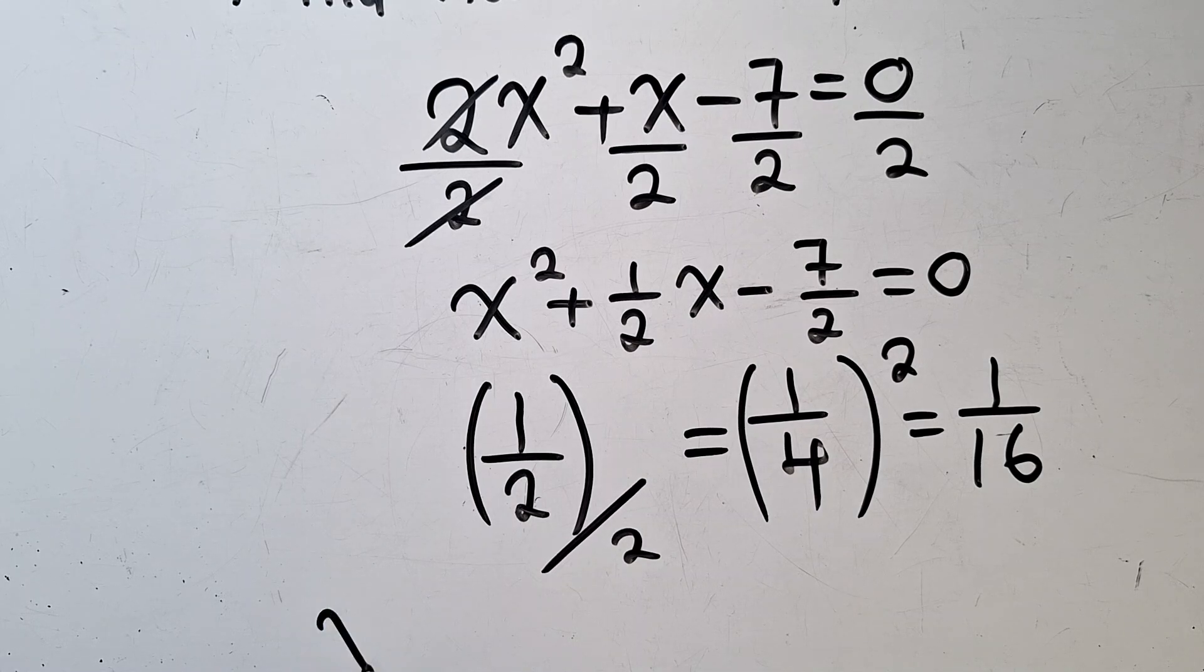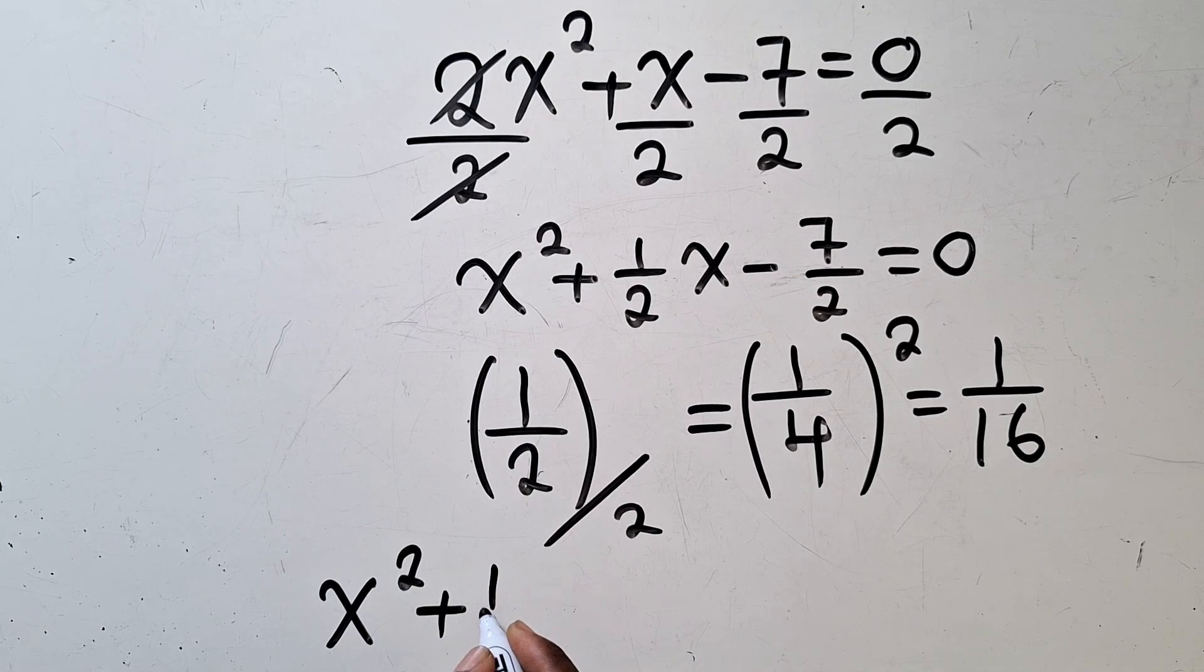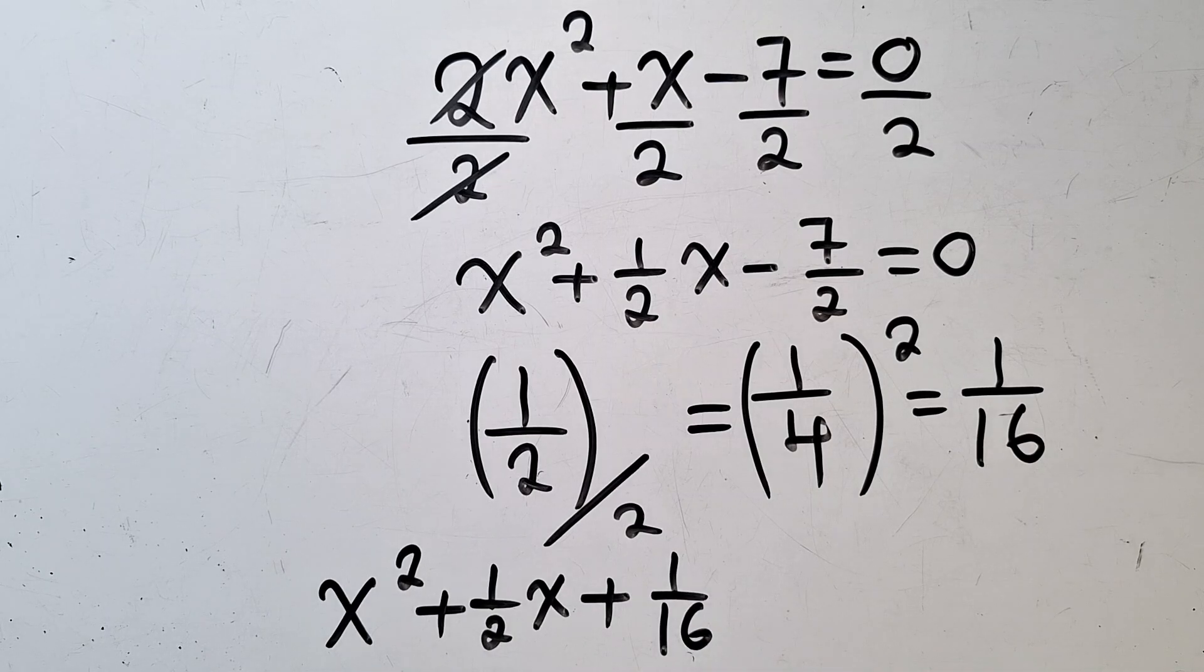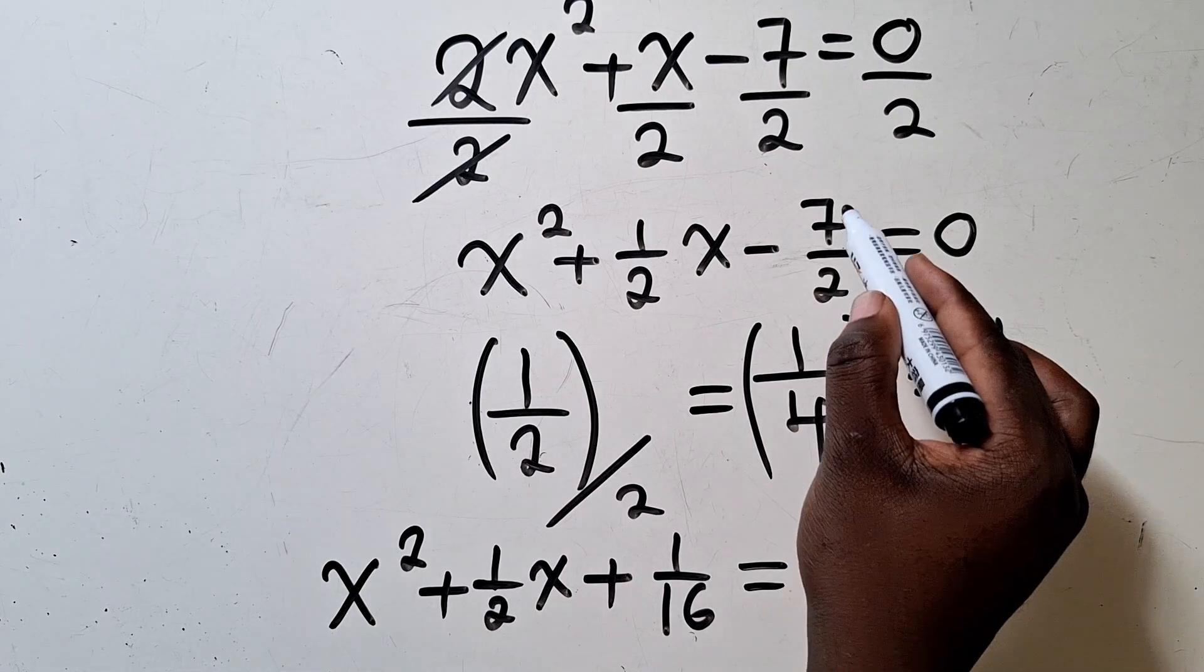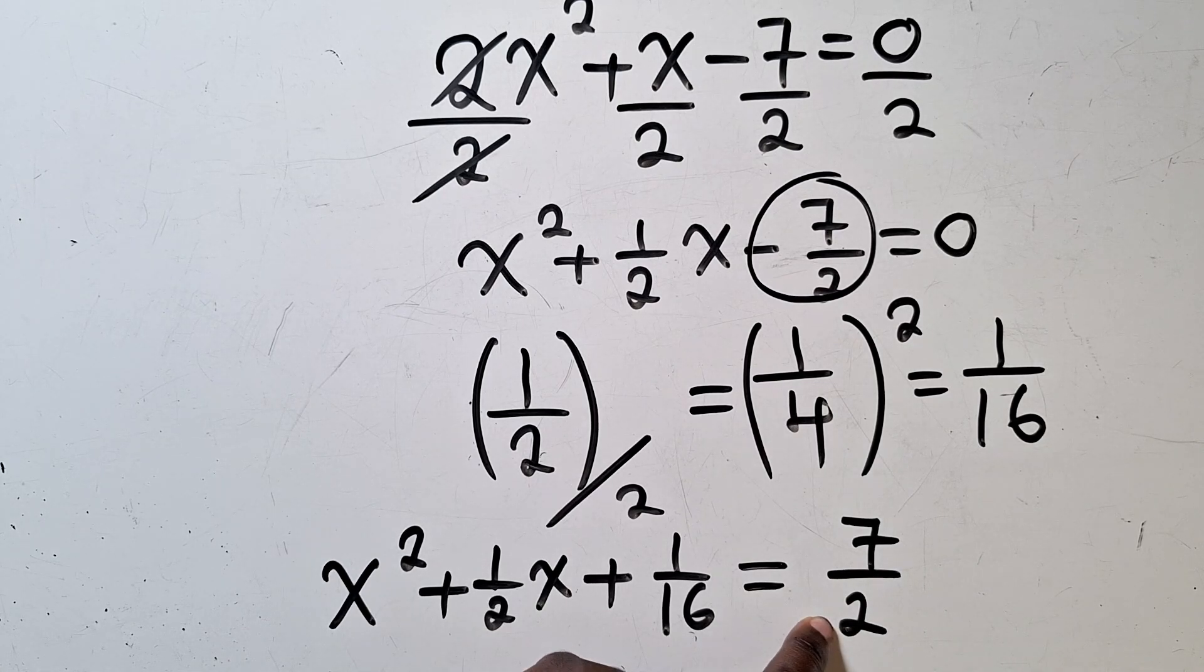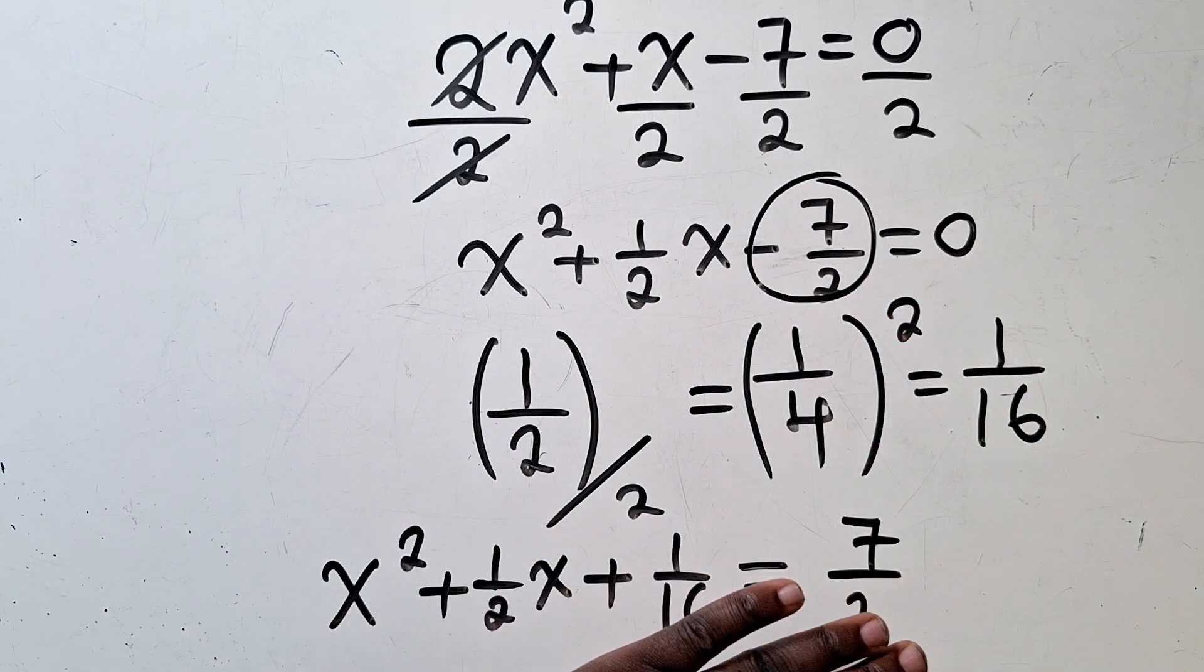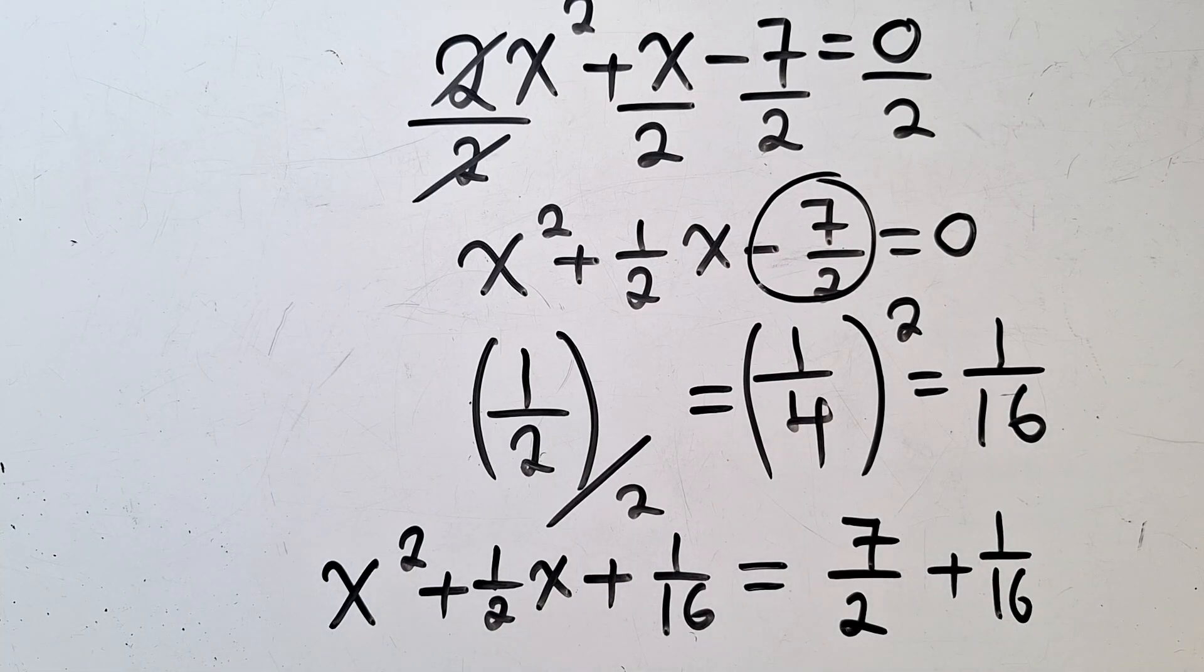So this will be x² plus 1 over 2x plus 1 over 16. So you now add this to both sides. This stuff, a constant, you can bring it this side. We are supposed to bring this constant this side. Even at this point you can move it. And then you say plus 1 over 16.